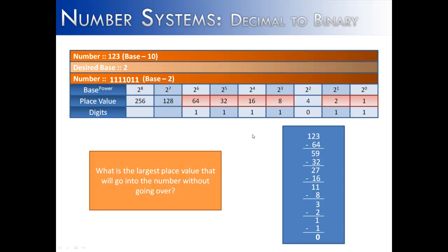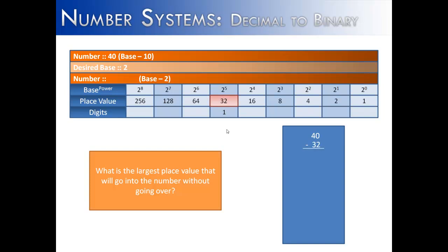Let's do this one more time with an easier number that doesn't require quite so much math — and that number is 40. I've written out my positional chart, 2 to the power of 0 all the way to 2 to the power of 8. We ask ourselves: what number will go into 40 without going over? That is 32, or 2 to the power of 5. We put a 1 underneath that slot, subtract from 40 and get 8. What number goes into 8 without going over? That is 8, and 8 minus 8 is 0. We put a 1 underneath the 8's position.